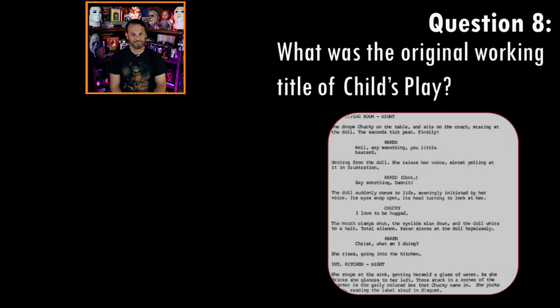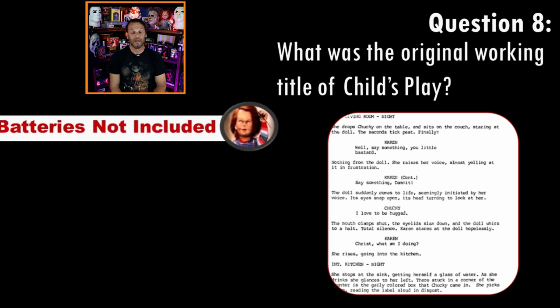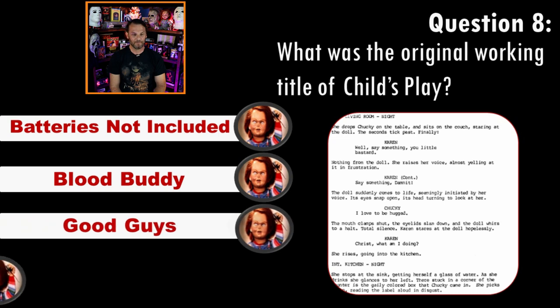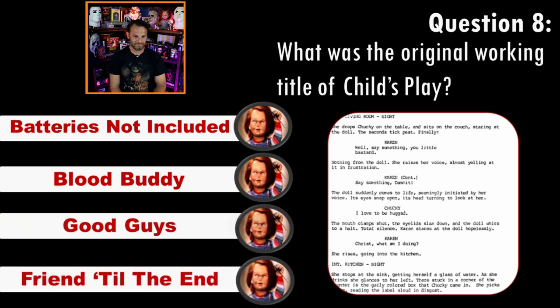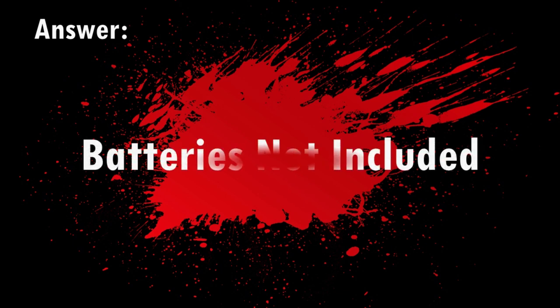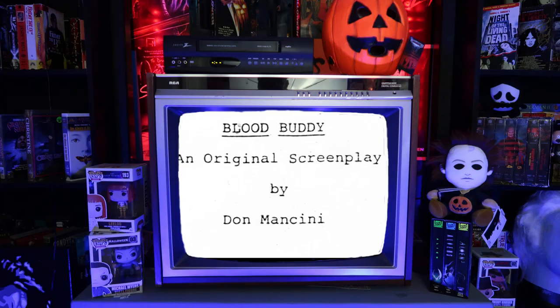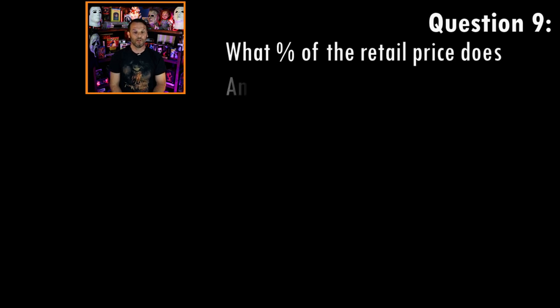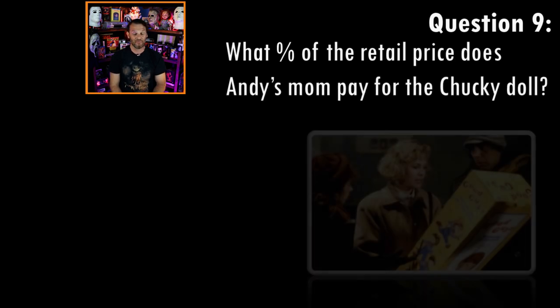Question eight: what was the original working title of Child's Play? Batteries Not Included, Blood Buddy, Good Guys, or Friend to the End? Answer: Batteries Not Included — originally called Blood Buddy, written by a young, talented writer. My title for the original script was Batteries Not Included, but my agent said we had to change it because Steven Spielberg was developing a movie called Batteries.